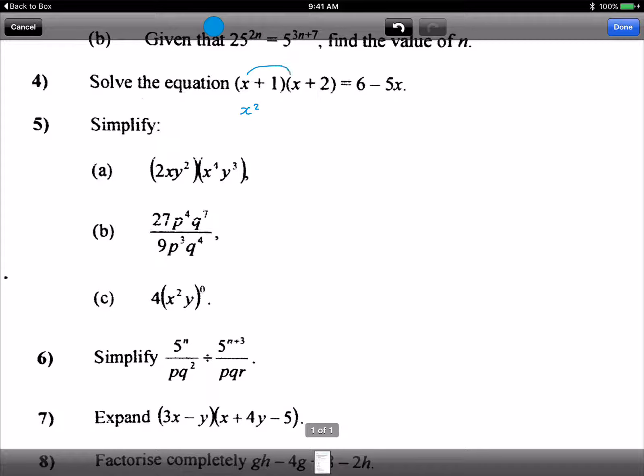So we get x squared because x times x is x squared, x times 2 is 2x, then plus x plus 2 equals to 6 minus 5x. So we will rearrange: x squared plus 3x plus 2 minus 6 plus 5x equal to 0.